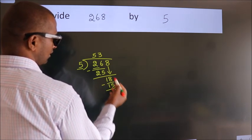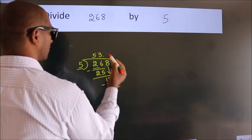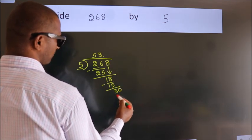After this, no more numbers to bring down. So what we do is, we put dot, take 0. So 30.